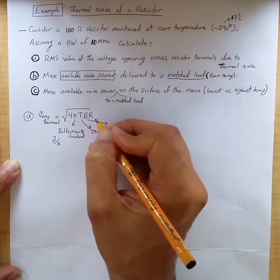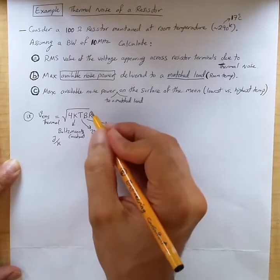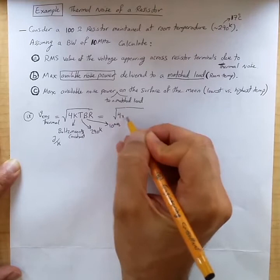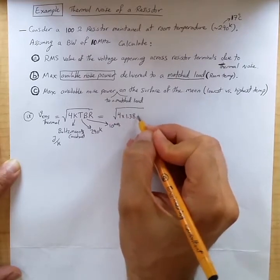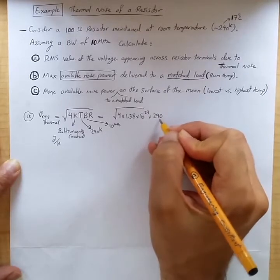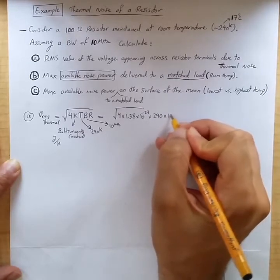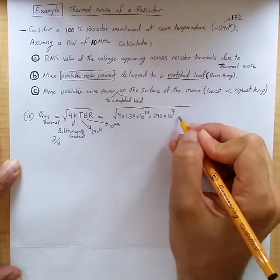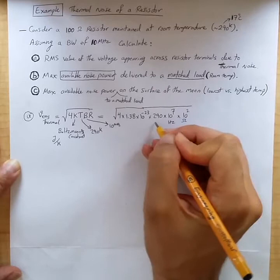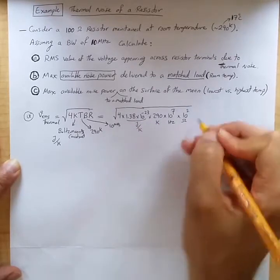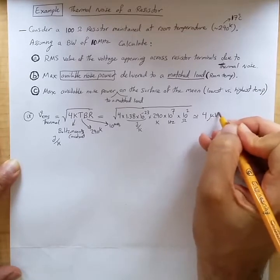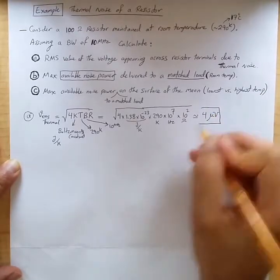And resistor value is given to be 100 ohm. So we get square root of 4 times 1.38 times 10 to the minus 23, times 290 Kelvin, times 10 to the 7 hertz bandwidth, times 10 to the 2 ohm. So this approximately becomes 4 microvolts. That's the VRMS.